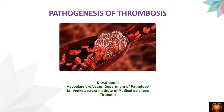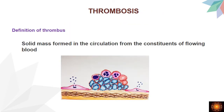Hello everyone, today I will be talking about the pathogenesis of thrombosis in this video. Coming to the definition: what is a thrombus? A thrombus is a solid mass which is formed in the circulation from the constituents of the flowing blood. It consists of platelets with enmeshed RBCs and WBCs — a solid mass formed from the constituents of the blood itself.